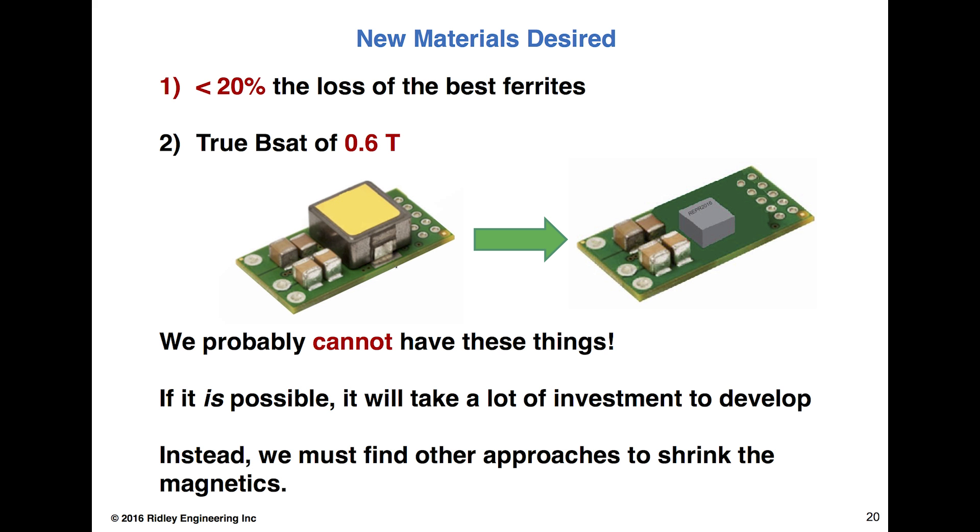But we probably can't have these things. It seems that ferrites can't go beyond 0.6 Tesla, and the materials that do go beyond there cannot have the low losses. Hopefully it may be possible, but it will take a lot of investment to develop this. And the core manufacturers are really in a bit of a quandary, because once somebody does something like this, it doesn't become a much more expensive core where they can recoup their investment. It's a very, you know, dirty industry of pressing powders together. And the investment dollars are just not there like they are in the semiconductor industry, so we need to find other approaches to shrinking the magnetics. All is not lost.